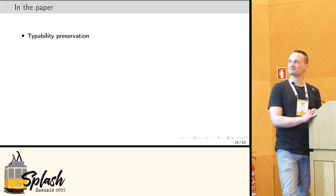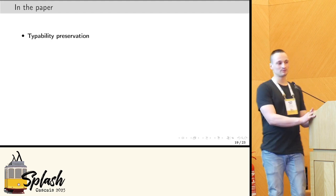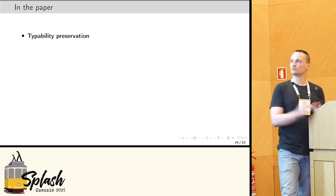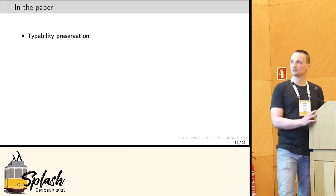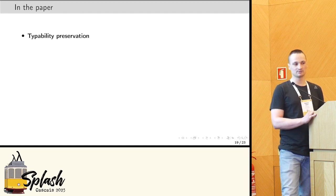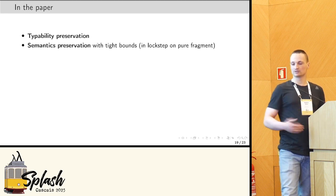Let me come back to several of the properties we were showing in the paper. As I said, we work in a type setting, so we show that both translations, CPS and DS translation, are typeability-preserving and also semantic-preserving.